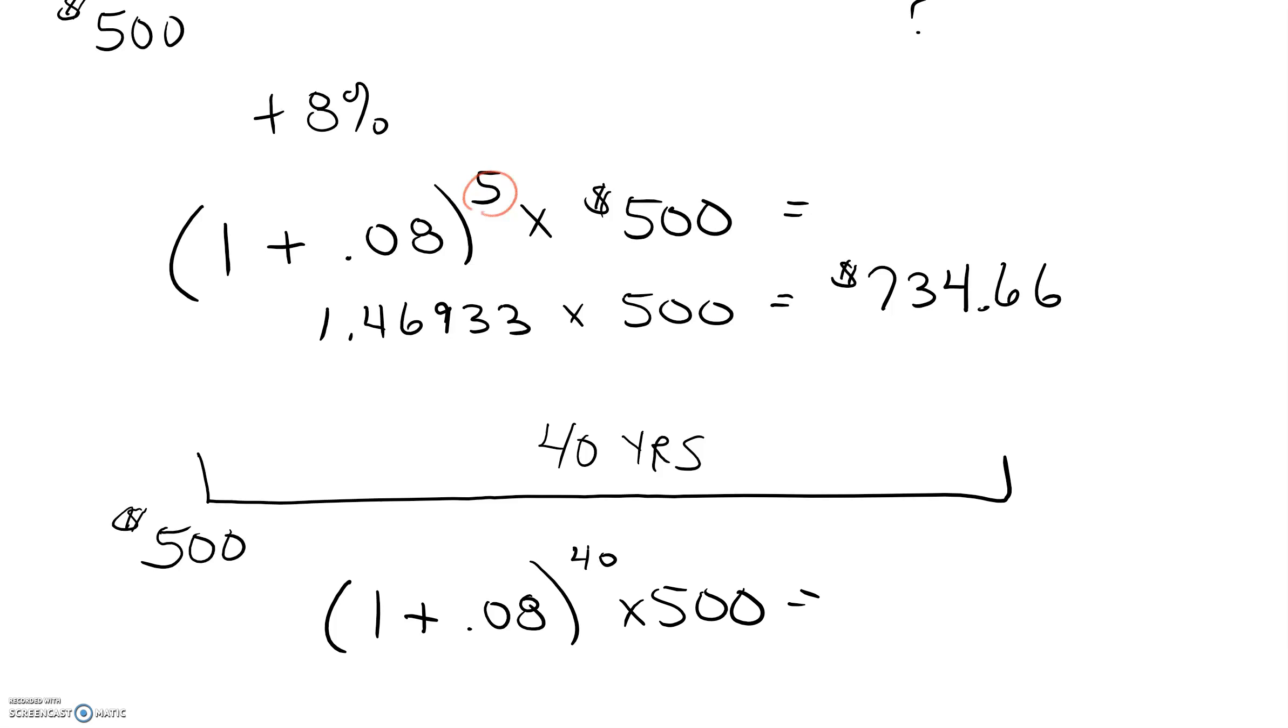Again on a calculator I'll take 1.08 raise it to the 40, multiply that by 500 and get $10,862.26.